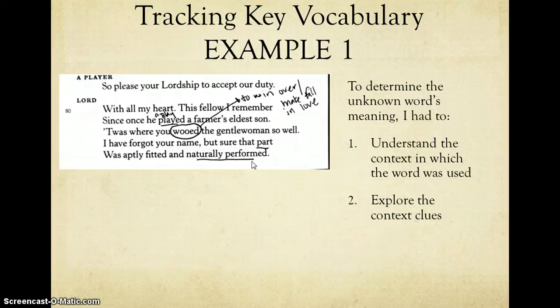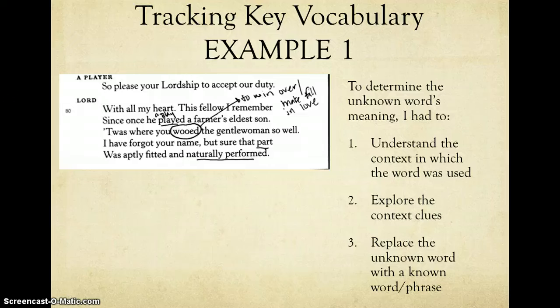Because of this, I start thinking, well, what are most plays about? And it leads me to think about love, which in turn leads me to the definition I came up with for my unknown word, which is to win over, or to make fall in love with. The third step is to replace the unknown word with the known word or phrase. So it makes sense to say, t'was where you won over the gentlewoman so well, or where you made fall in love with the gentlewoman so well. Both of those phrases make sense, and this is essentially me checking my work and making sure that I've learned a new word. This is a great way to build your own vocabulary.